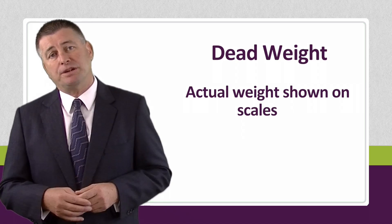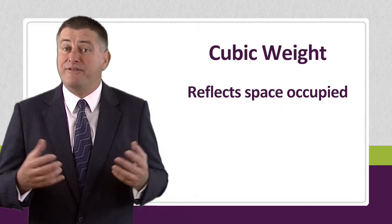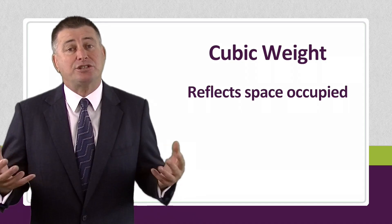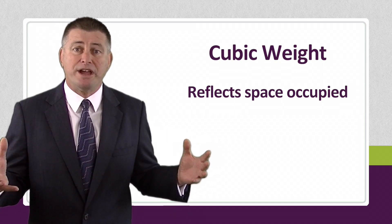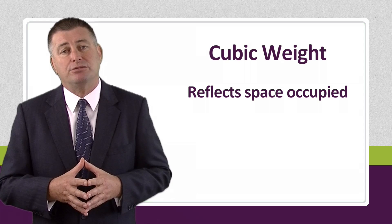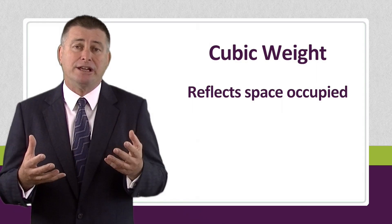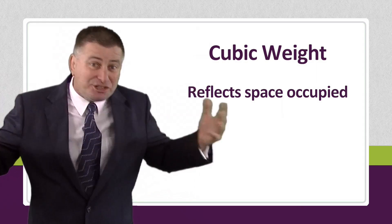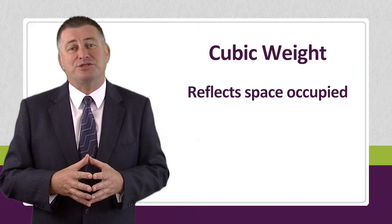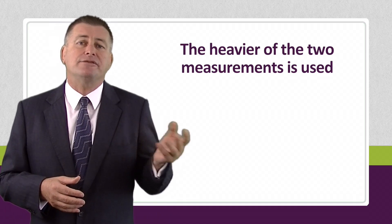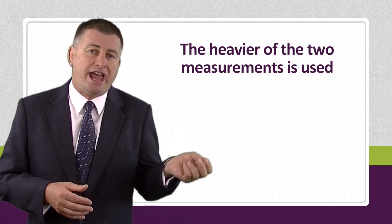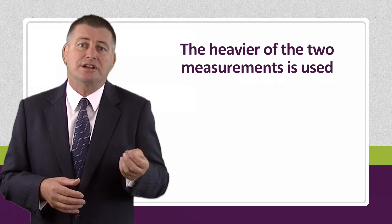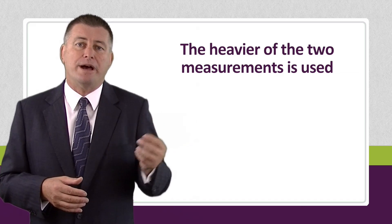However, there is a complication. Sometimes we have items or parcels that are very light, but actually take up a significant amount of volume or space, which restricts the amount of volume we can put into a vehicle. For instance, a pillow — very light in weight, but large, fluffy, and takes up a significant amount of space. So we use a second calculation, and it's the heavier of the two that is used to determine the actual weight utilized for billing of your parcel or package.